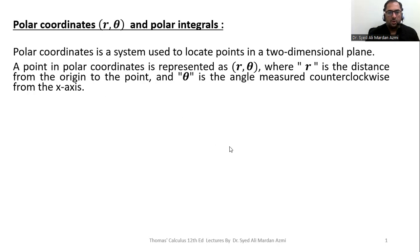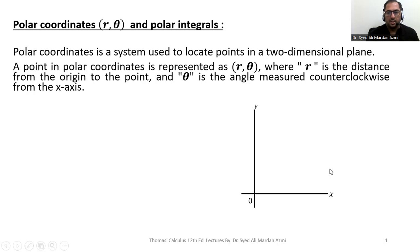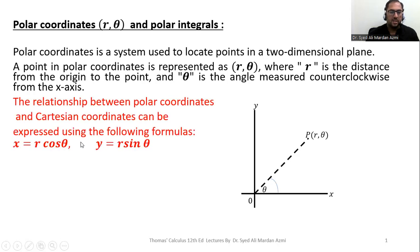A polar coordinate is a system which is used to locate a point in a two-dimensional plane. A point in polar coordinates is represented by (r, θ), where r is the distance from the origin to the point and θ is the angle measured counterclockwise from the x-axis. So in the two-dimensional plane, if P is a point whose polar coordinates are (r, θ), then r is calculated by the distance of this point from the origin and θ is measured as the counterclockwise angle with the positive x-axis.